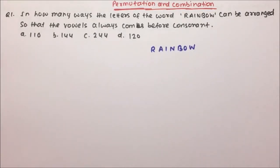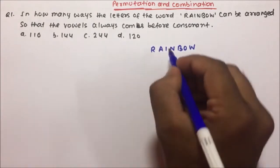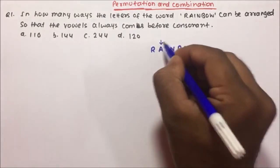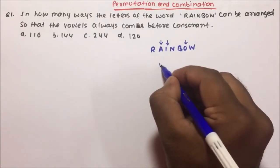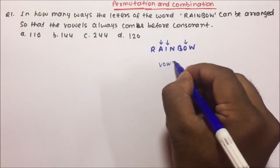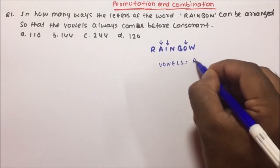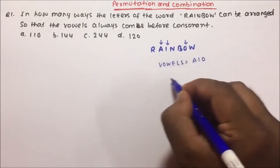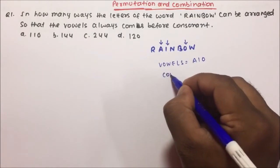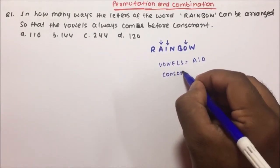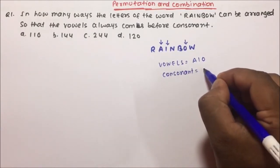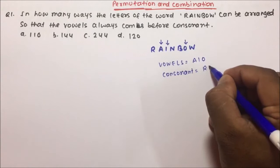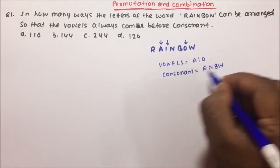Now how many vowels are here? We have A, I, and O — so we have three vowels: A, I, O. And if I talk about the consonants, then we have R, N, B, W — four consonants.